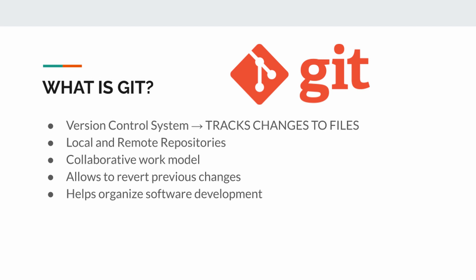If you do mess up the master branch, Git allows you to revert your previous changes. This goes back to version control, which tracks all changes to your files — adding, deleting, changing, everything line by line. It creates snapshots, which allows you to go back to a version in time when things were working.